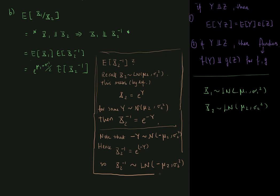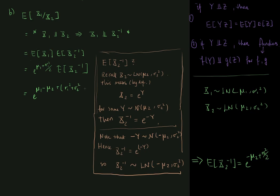So we arrive at the fact that x2 inverse is lognormally distributed with parameters minus mu2 and sigma2 squared. That means the mean of x2 inverse is simply e to the minus mu2 plus sigma2 squared over two. Therefore, the answer to part b is e to the mu1 minus mu2 plus sigma1 squared plus sigma2 squared, all over two. And that is the solution.